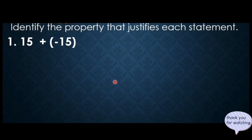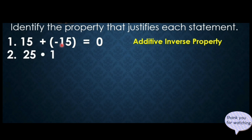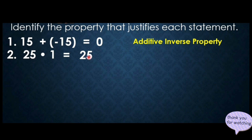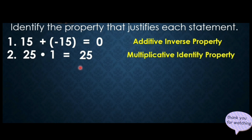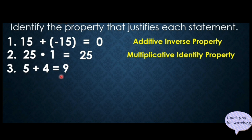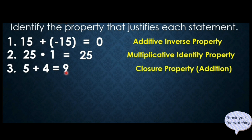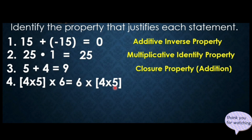Let's practice — identify the property that justifies each statement. Number 1: 15 plus negative 15 equals 0. When you add a number and its opposite, that is additive inverse property. Number 2: 25 times 1 equals 25. When you multiply a number by its multiplicative identity, that is multiplicative identity property. Number 3: 5 plus 4 equals 9. When two integers are added and the resulting sum is always an integer, that is closure property under addition. Number 4: (4 times 5) times 6 equals 6 times (4 times 5). The property applied is commutative property of multiplication.